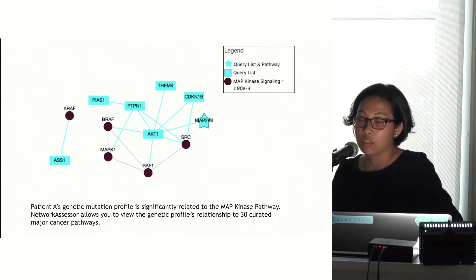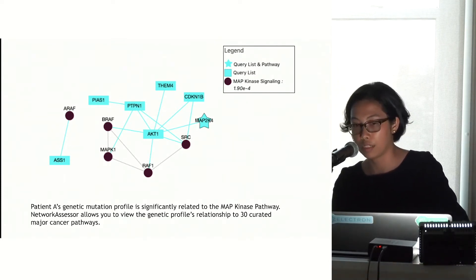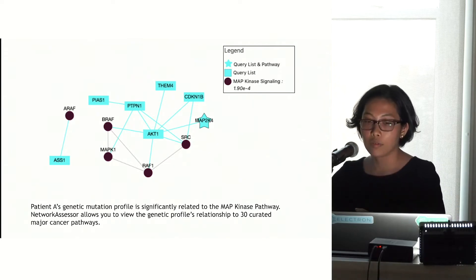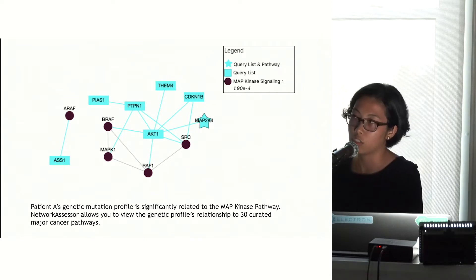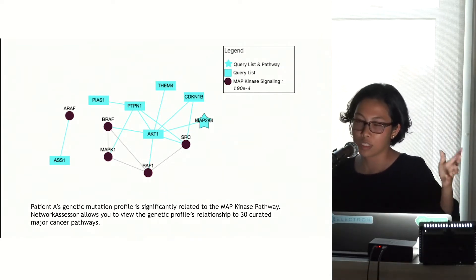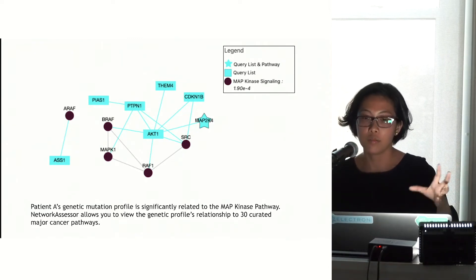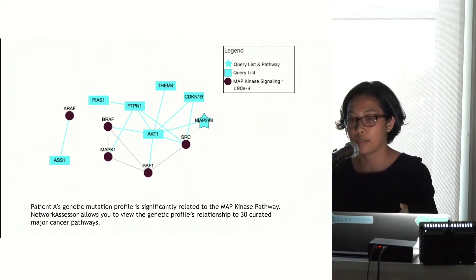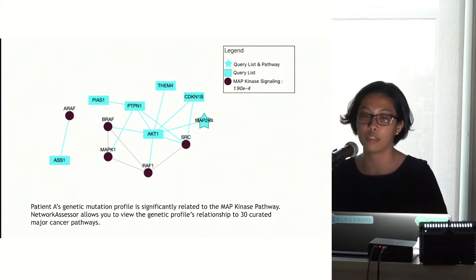Network Assessor allows you to view a particular genetic profile or list of genes' relationship to 30 expertly curated major cancer pathways. We determine which pathways are most significantly related to a particular tumor profile based on statistical analysis. You can see here that MAP kinase signaling has a pretty significant relationship to this particular tumor profile.